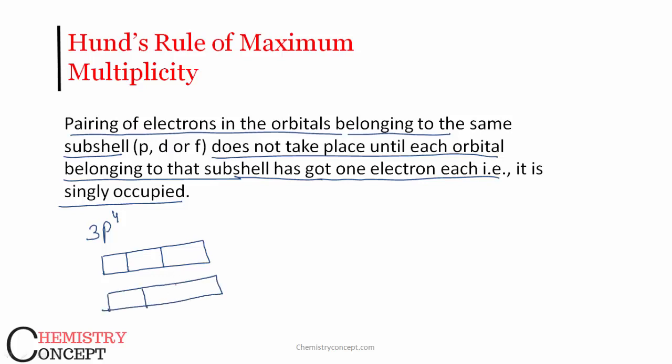The first one is: one, two, three, four. And the second one is: first of all, all three orbitals would be singly occupied—one, two, three—and then it would be the fourth. So the first method is incorrect as per Hund's rule of maximum multiplicity. The allowed one is the second one.